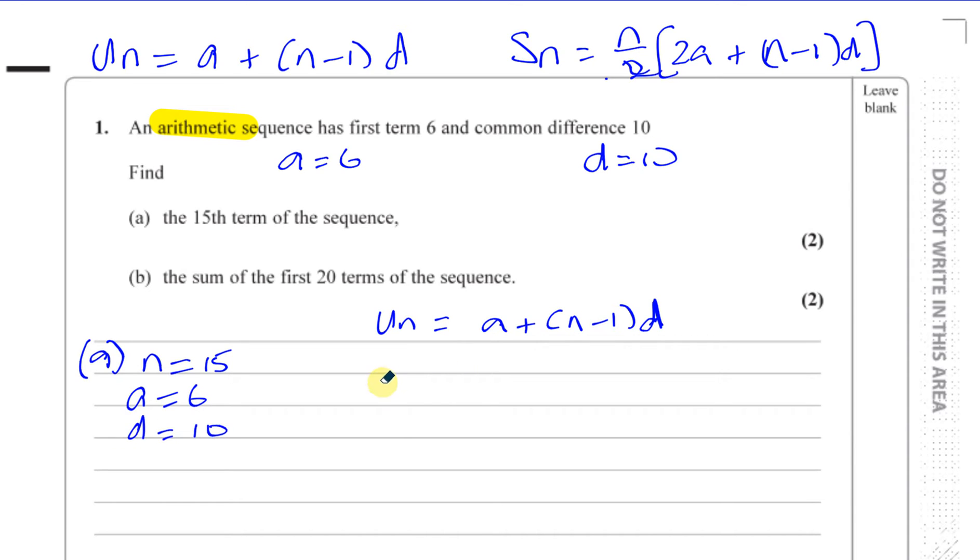The 15th term is going to be given by a, which is 6, plus n, which is 15, 15 minus 1, which is 14, times d, which is 10. So that's 140 plus 6, which is 146.